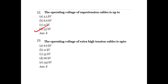Second question: The operating voltage of extra-high-tension cables is 66 KV. Super-tension cables operate at 33 KV, and extra-high-tension cables operate at 66 KV.